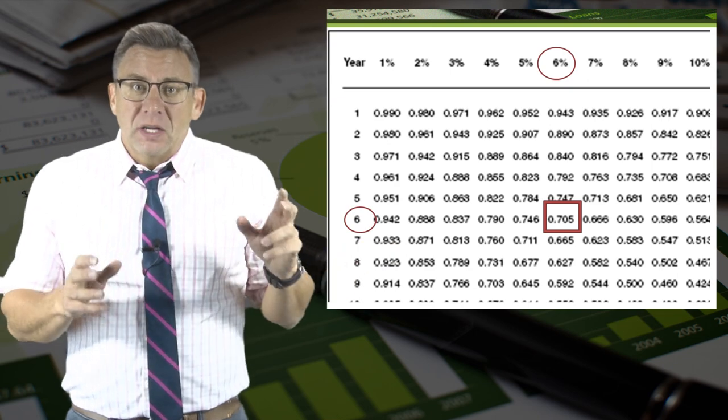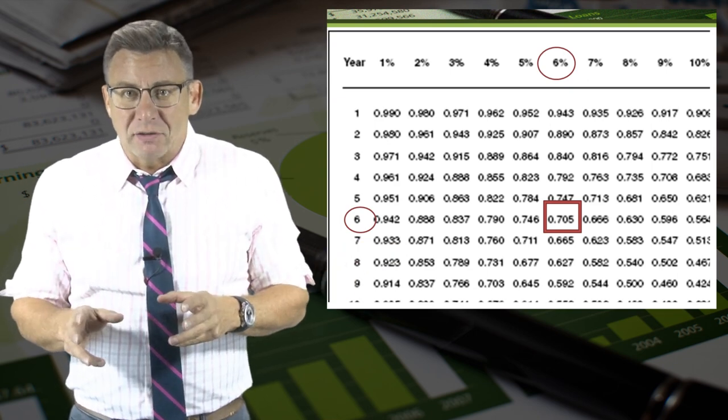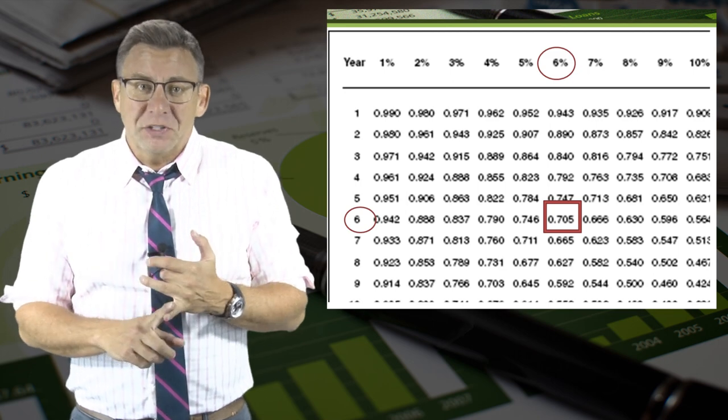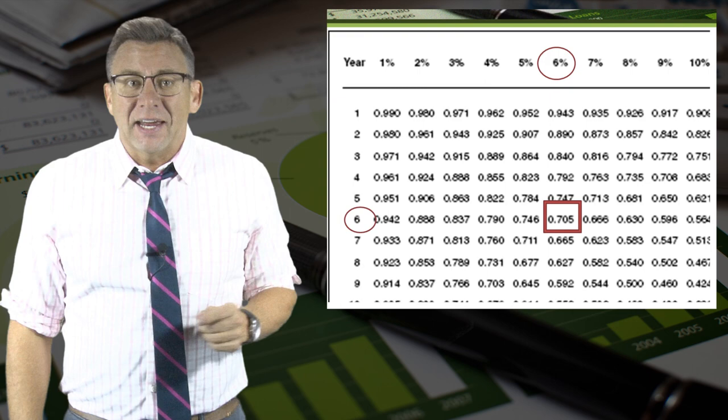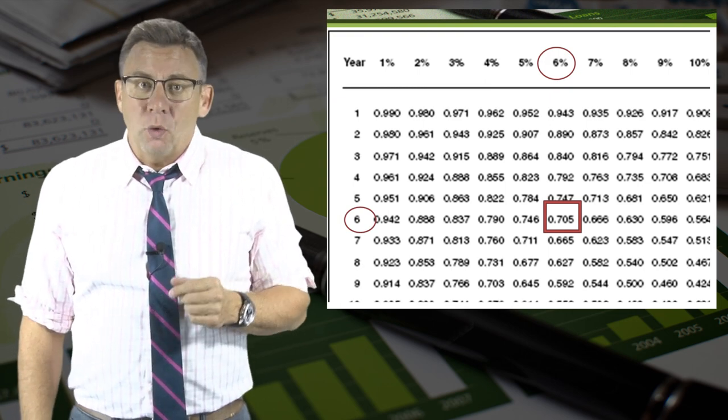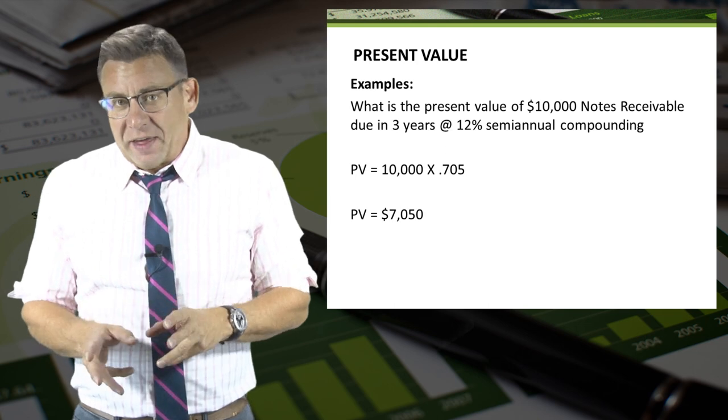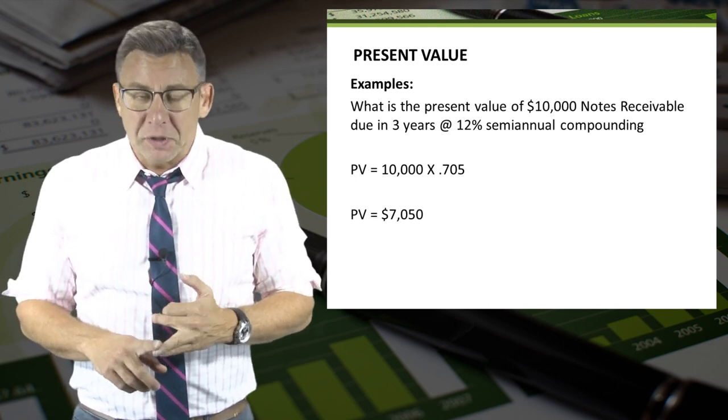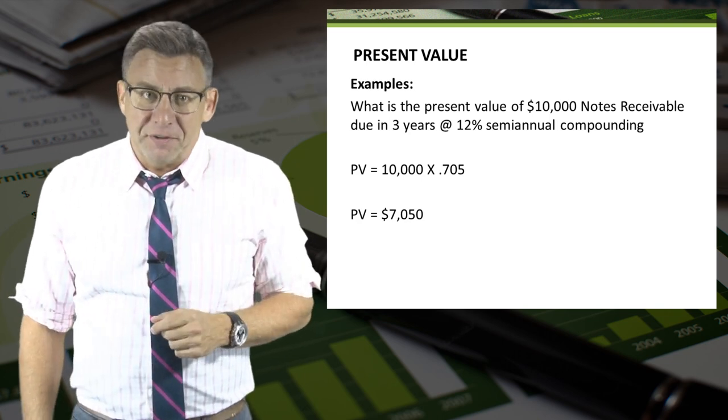Back to the table. Still using the present value of $1 because this is a one-time amount, I identify 6% interest and 6 periods. They intersect at the present value factor .705. So the present value of $10,000 due in three years at 12% semiannual compounded interest is $7,050.